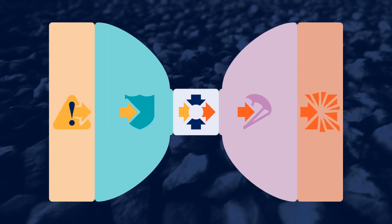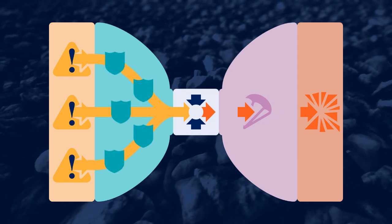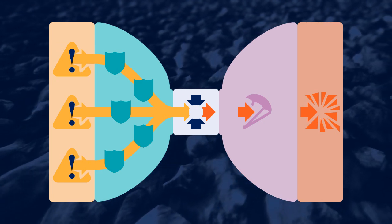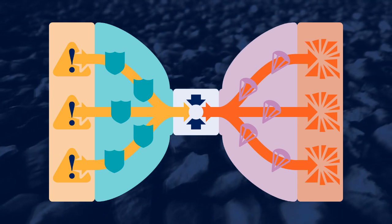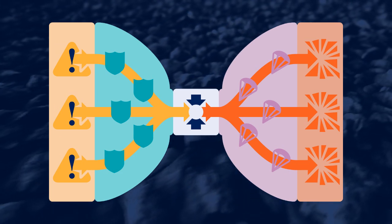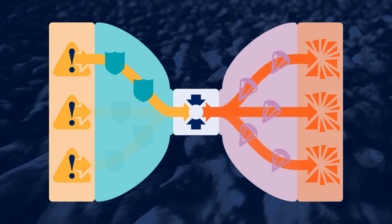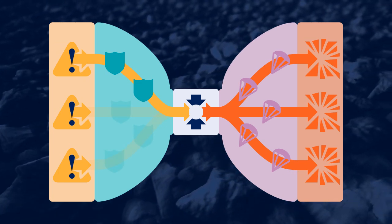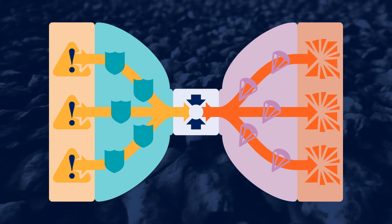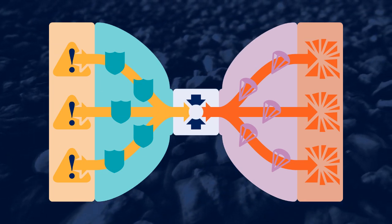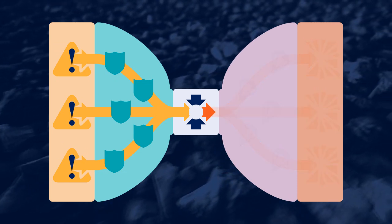Each bowtie consists of a single initiating event in the center, a list of possible causes on the left each with its own specific preventive controls, and stemming from the initiating event on the right side is a list of possible consequences each with its own specific mitigating controls. Using bowties requires a bit of a shift in thinking. It's important to recognize that a cause can potentially lead to any of the consequences, and that bowtie modelling doesn't form a direct relationship between individual causes and individual consequences. The relationship between causes and consequences is managed through the central knot or initiating event. So the thinking is not cause and effect or cause and consequence — it's cause and event, then event and consequence.